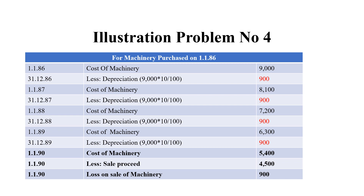Since it is the straight line method, or original cost method, depreciation is the same each year. For 4 years, depreciation is Rs. 900 per year on cost of 9,000 at 10%, giving total accumulated depreciation of Rs. 3,600. That asset was sold for 4,500, so we have made a loss on sale of that machinery of Rs. 900.